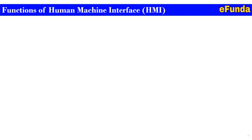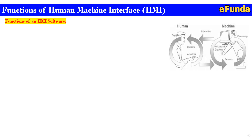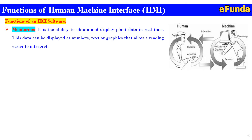Moving on to functions of the HMI system. One can refer the picture where human and machine interface or interaction is shown, where the machine is talking to the human that is the operator, or the operator is giving instructions or information to the machine. First, monitoring: it is the ability to obtain and display planned data in real time. This data can be displayed as numbers, text or graphics that allows readings to be easier to interpret.